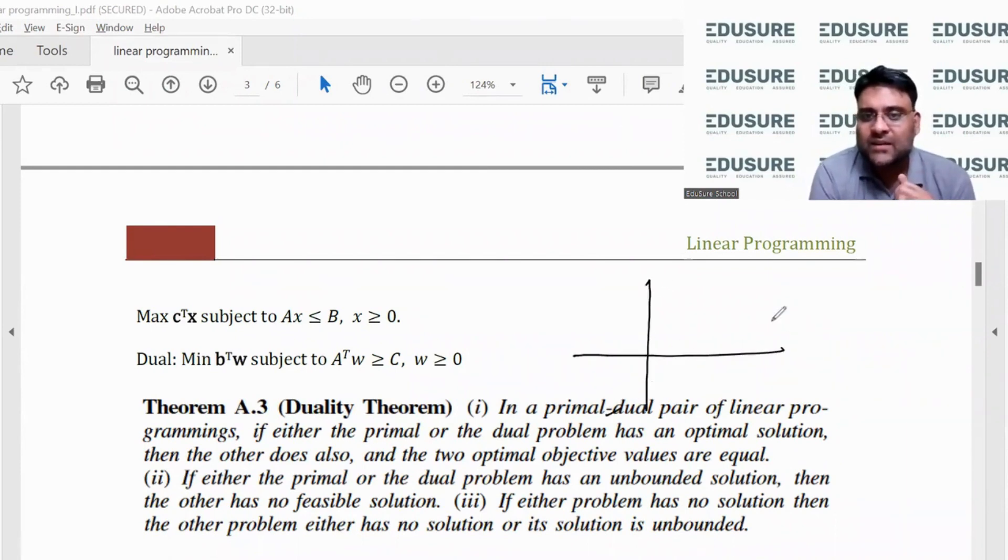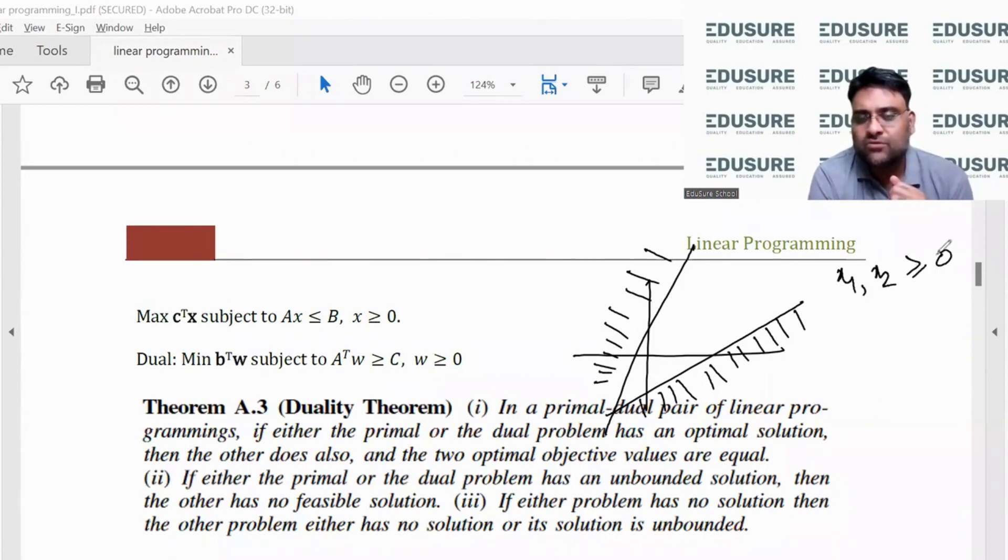Like, for example, one line is like this and the other line is like this, and the feasible part for this line is here, the feasible part for this line is here, and x1 and x2 are both greater than or equal to 0. You notice that in the x1 and x2 positive space, there is nothing in common between the two constraints. So in this case, we say that there is no feasible solution.